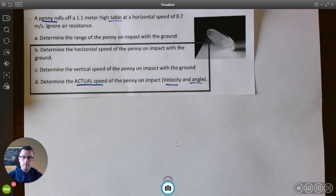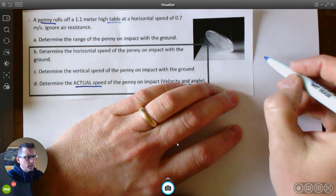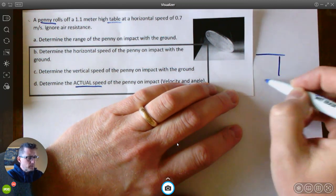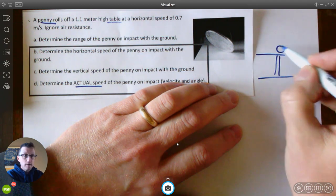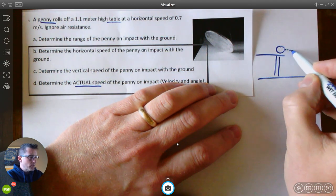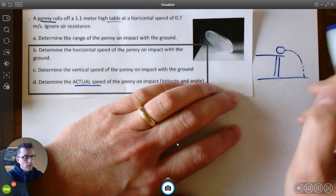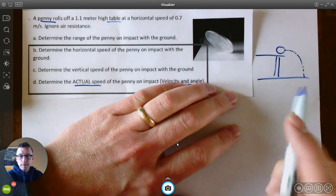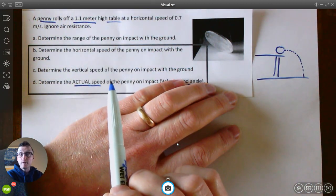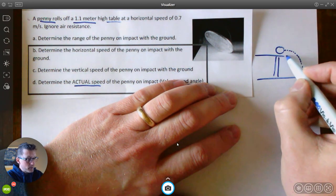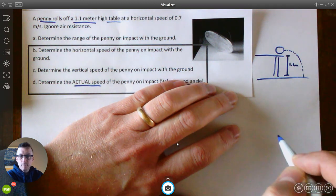So first, as always, draw your picture. Here I have my penny. I'm just going to be real. There's my table. There's the floor. Here's our penny. And we know that if it's shot straight sideways, it's going to kind of create an arc like that, right? Okay. Now, what do we know about this? We know that the penny on a table is 1.1 meters high. So from here to here is 1.1 meters.